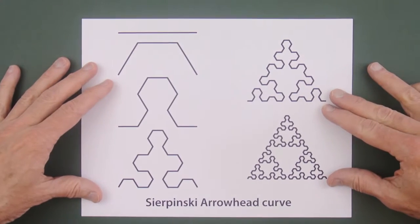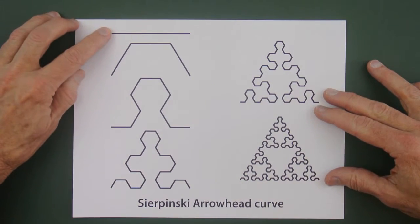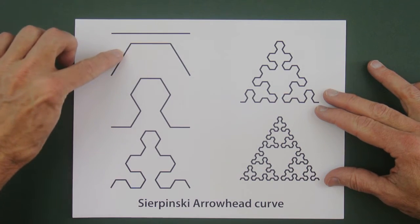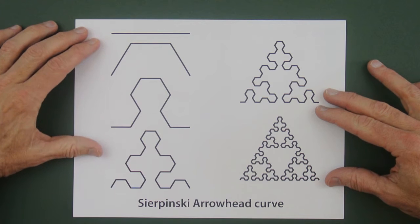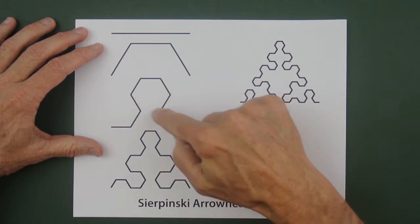Now moving on to the Sierpinski arrowhead curve. You may not be familiar with this one. You start with one line segment, triple it, arrange it like this. These are 120-degree angles. You arrange three copies of that as shown, one facing out and two facing in.